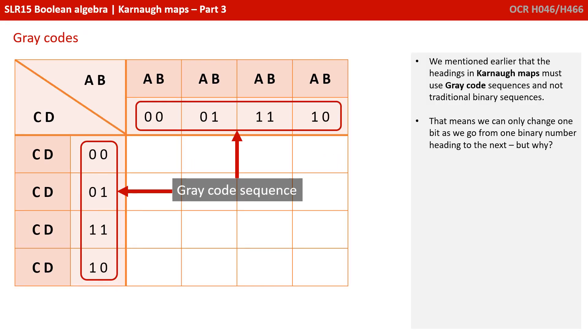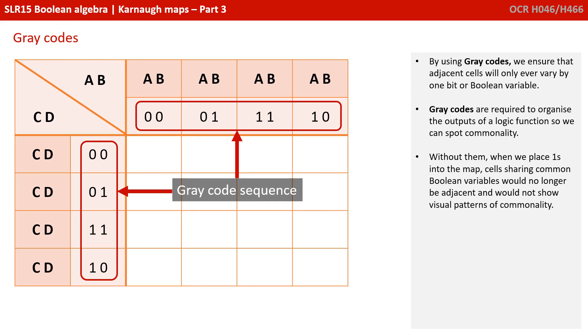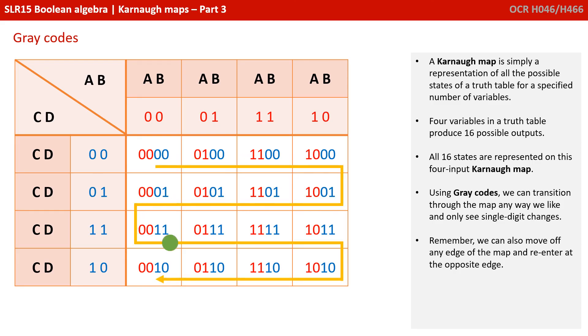So we mentioned earlier that the headings in Karnaugh maps must use gray code sequences and not traditional binary sequences. That means we can only change one bit as we go from one binary number heading to the next. But why? By using gray codes, we ensure that adjacent cells will only ever vary by one bit or Boolean variable. Gray codes are required to organize the outputs of a logic function so that we can spot commonality. Without them, when we place ones into the map, cells sharing common Boolean variables would no longer be adjacent and would not show any visual patterns or commonality.